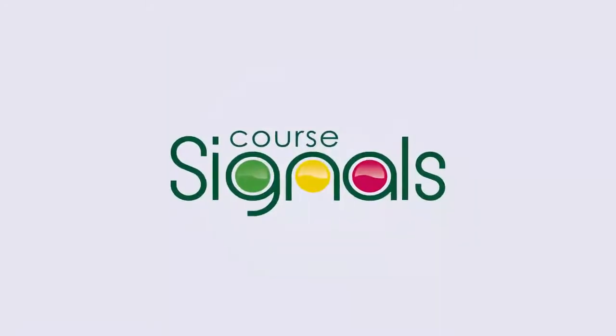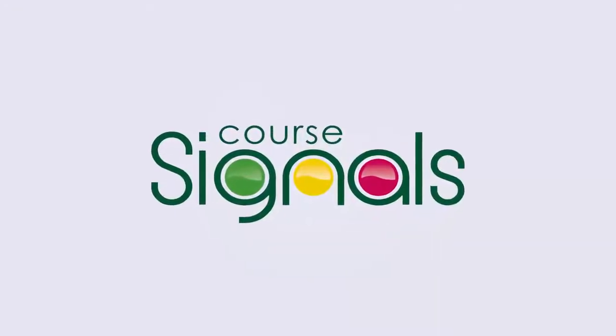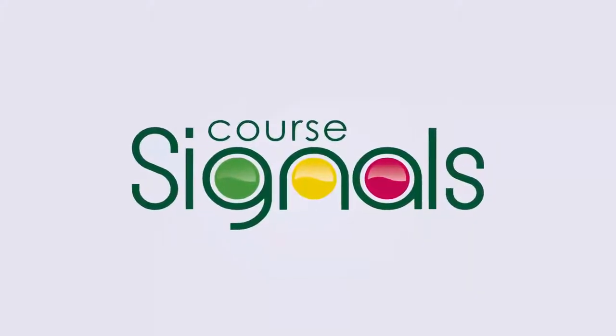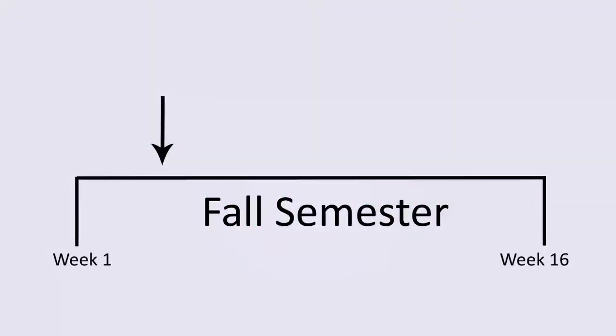Course Signals is a tool that predicts how you'll do in a course and alerts you about potential problems. Let's say we're at week three in the semester. If you wanted to predict how well you would do at the end of a course, what would you want to know?